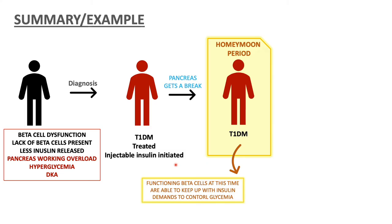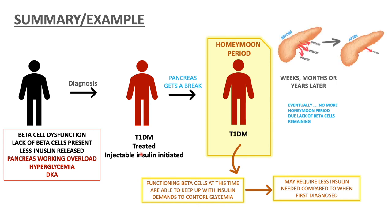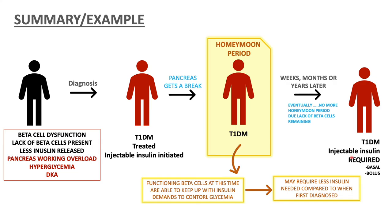Around this time would be the honeymoon period, during which the functioning beta cells are able to keep up with insulin demands to control glycemia. Because injectable insulin has given the pancreas time to recover, the requirements for injectable insulin will be less compared to at first diagnosis. Progressing weeks, months, or even years later, eventually insufficient insulin will be released and this is when full-blown type 1 diabetes develops, requiring basal and bolus injectable insulin.